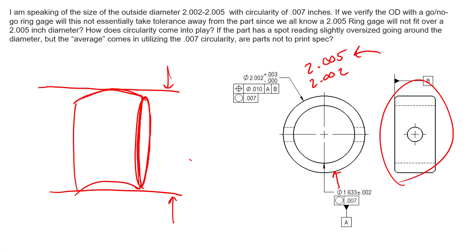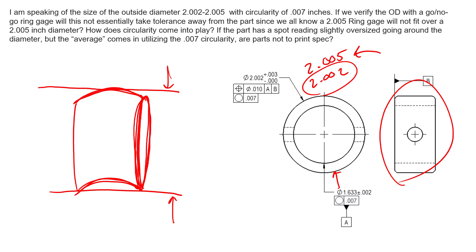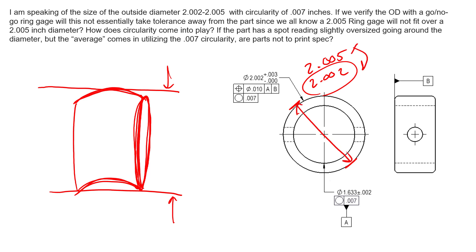It has deviated beyond that functional envelope, and you should reject that part. Now if this diameter measures small — such as 2.002 — you're allowing a little bit of form error, a little bit of bow, and still not deviate beyond that envelope of perfect form at MMC. Anything that measures at 2.005 on the diameter more than likely is a failing part. Any local size, or spot size as you're calling it, has to be inside these tolerances. We can't be any smaller than 2.002 — if we check from here to here, this can't be any smaller than 2.002.